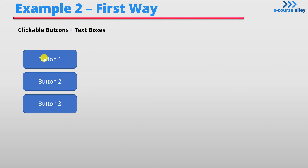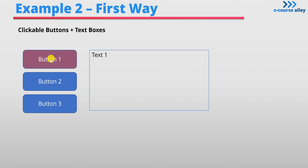Here's our slide with three buttons, and you can see the little hand pop up, meaning that I can click on these to show different things. When I click on button one, we see text one — this will be some text you wanted to show — and button one changes color. When I click button two, button two changes color and we see text two. When I click button three, button three changes color and text three shows. When these buttons change color, the other ones change back to blue.